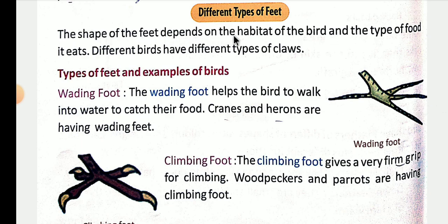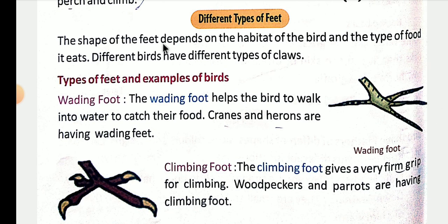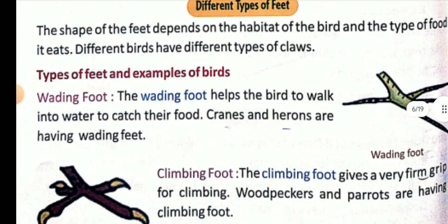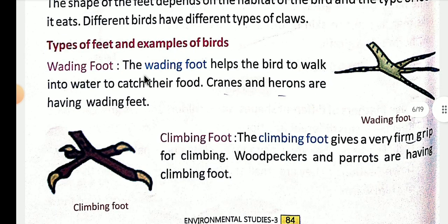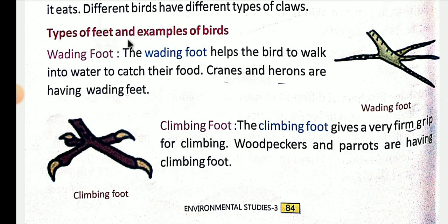The shape of the feet depends on the habitat of the bird and the type of food it eats. Jo pair ka aakaar hota hai, panje ka aakaar hota hai pakshi ka, wo depend karta hai ki wo kaisi jagah par rehta hai aur kaise tarike ka khaana khaata hai. Different birds have different types of claws — alag alag tarah ki chidiyon ke alag alag tarah ke claws paaye jaate hain. Different types of feet — hum ab feet ke types ko padhenge aur birds ka example bhi dekhenge.